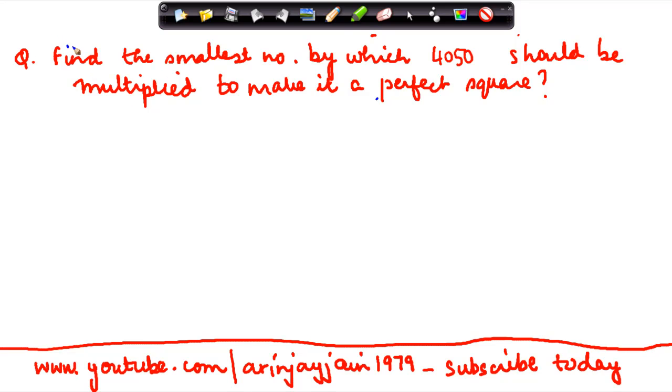So we have a problem where we have been told: find the smallest number by which 4050 should be multiplied to make it a perfect square. Now what does this mean? This means that 4050 is not a perfect square.